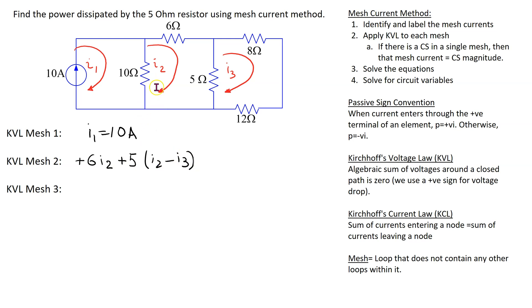Last, we have the 10 ohm resistor. And for this one, we have 10 I2 minus I1 is equal to 0.